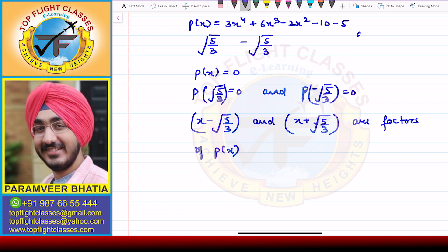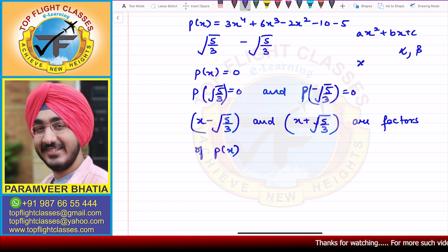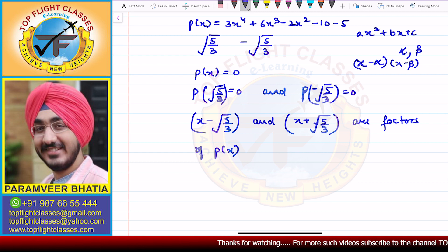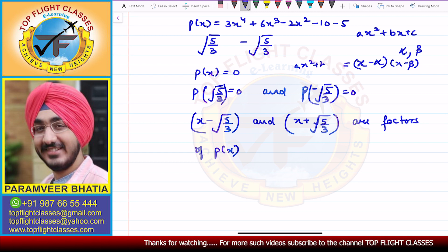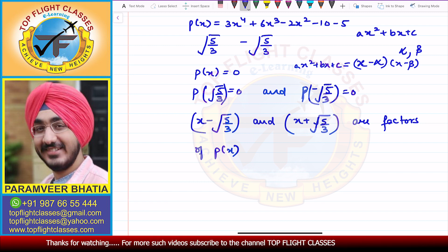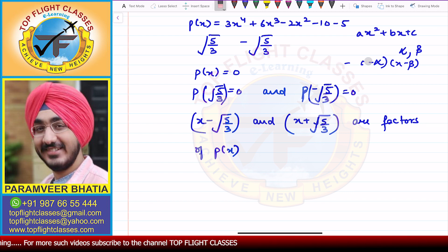When we put a quadratic ax² + bx + c and take zeros alpha and beta, we write it equal to (x - α)(x - β), which equals ax² + bx + c. Here we have done the same thing: (x - √(5/3)) and (x + √(5/3)) become the factors of the given polynomial.